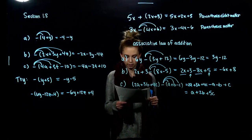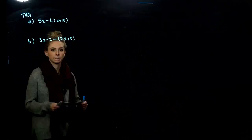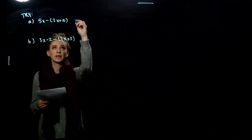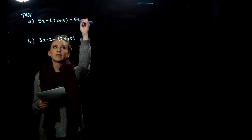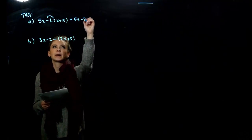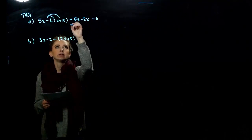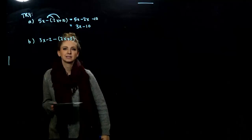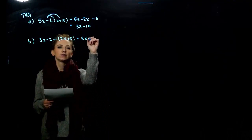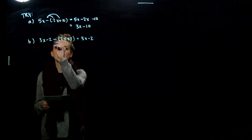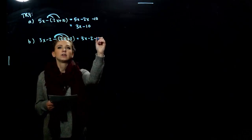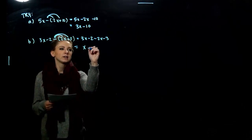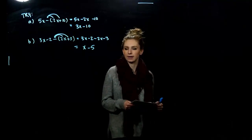Take those two tries — remove the parentheses and simplify. Parentheses did matter in both cases since we have a negative on the outside. For the first one: 5x didn't change, and now we have minus 2x minus 10, giving 3x minus 10. In the second example, the first two terms were unchanged, but we distribute the negative to get rid of the parentheses, leaving 1 factor of x and minus 5 for the constants.